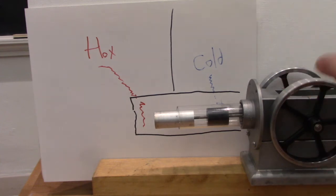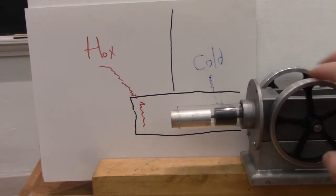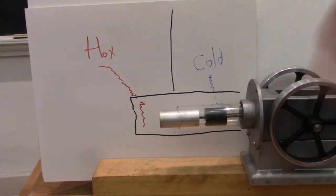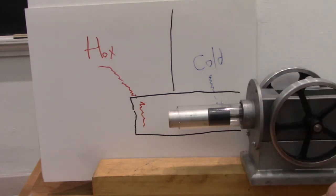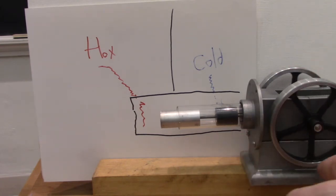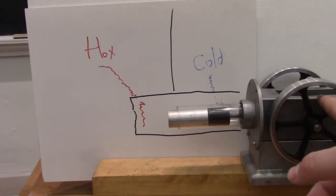These flywheels over here have a high moment of inertia, so they keep us spinning when we're right in between. That's important because there are points in the cycle where we're not being pushed either way. But because these flywheels are already spinning they're going to keep us going through the points where there's no pressure.